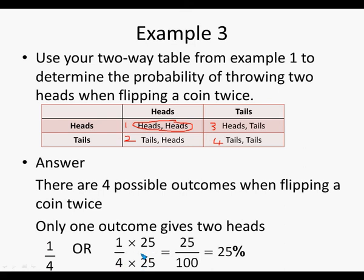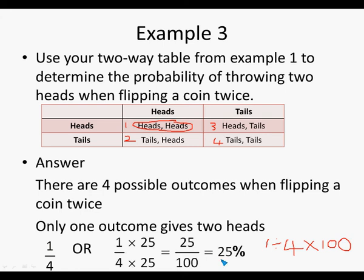We use 25 because if we want to write a fraction as a percentage, we need to get 100 as the denominator, since percent means out of 100. So one out of four becomes 25 out of 100, which is 25%. Alternatively, one divided by four equals 0.25, and 0.25 times 100 gives us 25. So there is a 25% chance of getting two heads when flipping a coin twice.